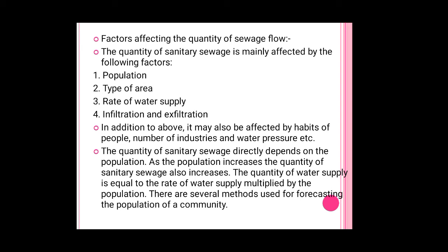The factors affecting the quantity of sewage flow are: population, type of area, rate of water supply, and infiltration and exfiltration. The quantity of sanitary sewage is mainly affected by these factors, and may also be affected by habits of people, number of industries, and water pressure. The quantity of sanitary sewage directly depends on population — as population increases, quantity of sanitary sewage also increases. The quantity of water supplies equals the rate of water supply multiplied by the population, and there are several methods used for forecasting population.